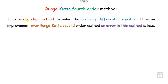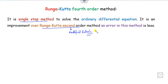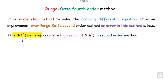What is the Runge-Kutta fourth order? It is a single-step method, meaning you compute the slope only at the regular point. It is an improvement over the second order method, that is the modified Euler method, and has lesser error. The error is of order h to the power 5, where h is the step size, compared to order h³ for the modified Euler method.